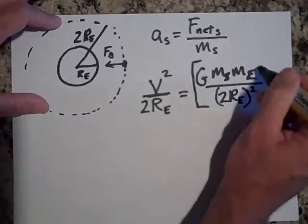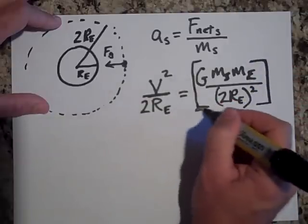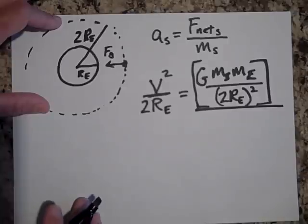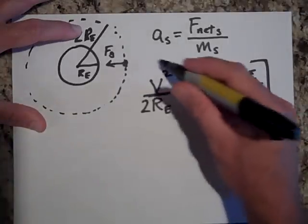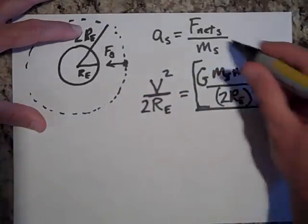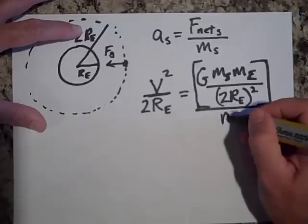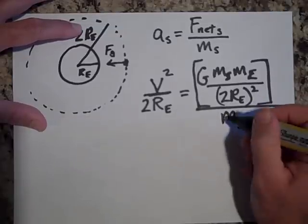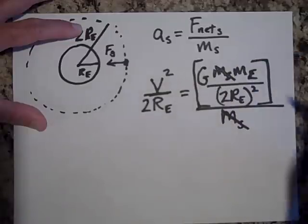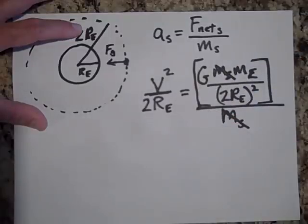Let me box that so you see that's one force. See how that's one force up there? So a equals F net all over the mass of what? The satellite. So boom, boom. Let's get rid of one 2RE.